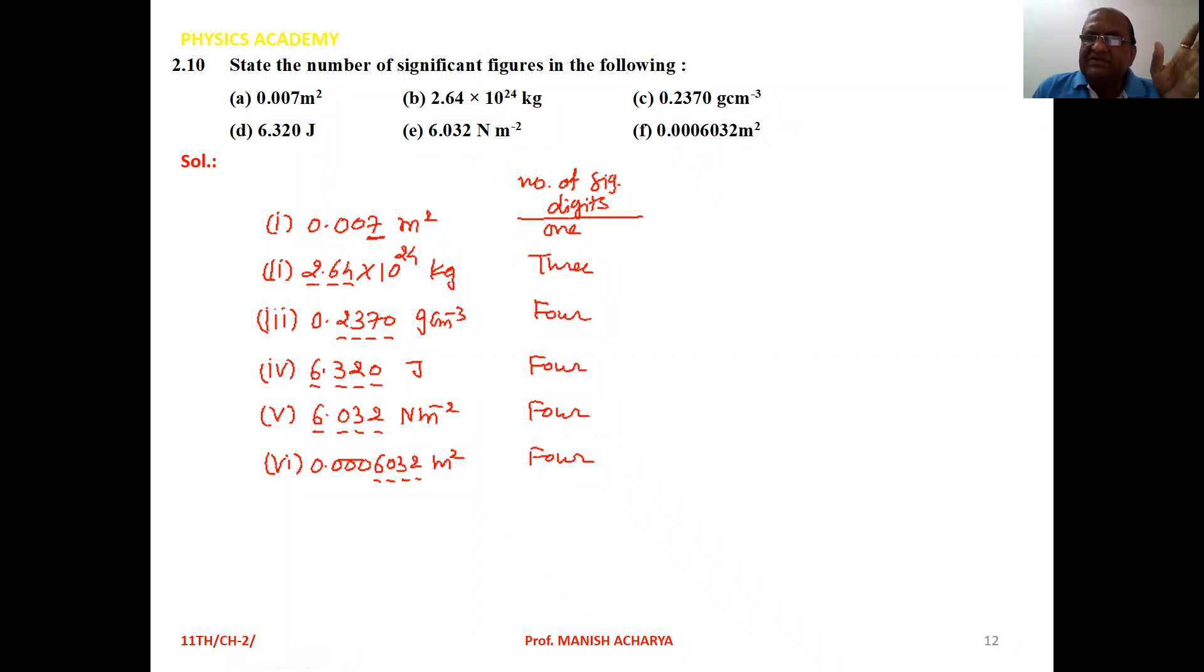Then 0.0006032 m². So again in this one, four significant digits are there. Clear to all of you.